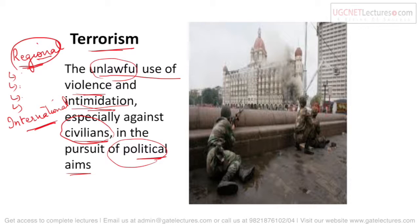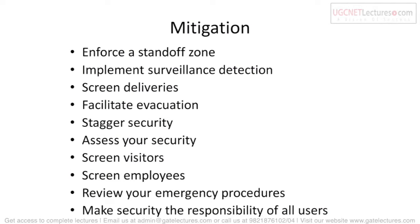Mitigations for terrorism include: enforcing stand-off zones and being prepared; implementing surveillance and detection by government agencies like IB and RAW; screening deliveries and packages to ensure no unwanted substances are being delivered; and facilitating evacuation if a terrorist attack occurs so people can be rescued from the area.